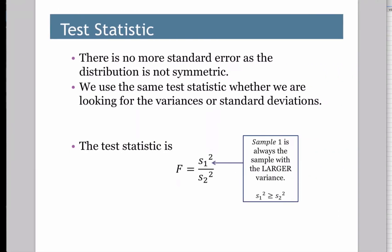Now when we do this, this is our test statistic, and our test statistic is extremely easy. It's just s1 squared over s2 squared. So you divide the two variances. However, super important, sample one is always a sample with the larger variance. And now here's the reason why. Because this number is larger, when you divide them, F is always going to be bigger than 1.